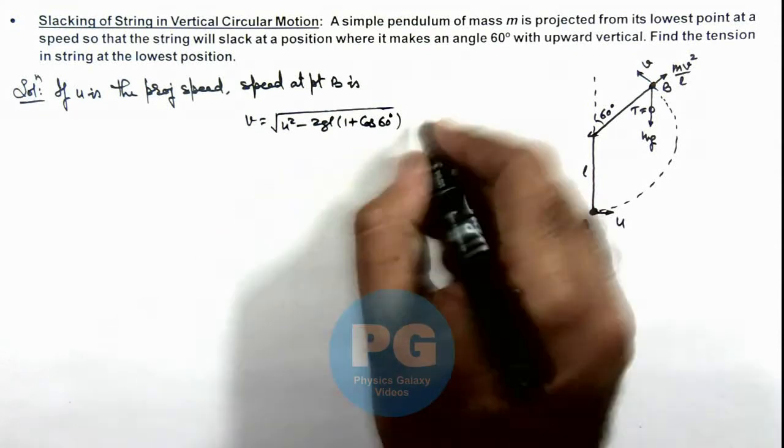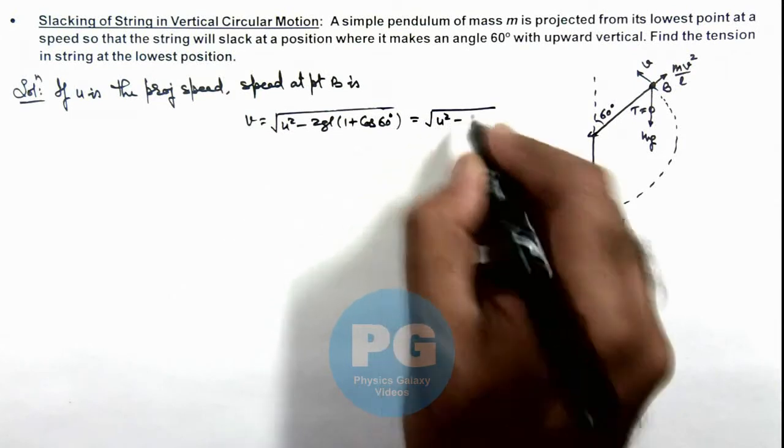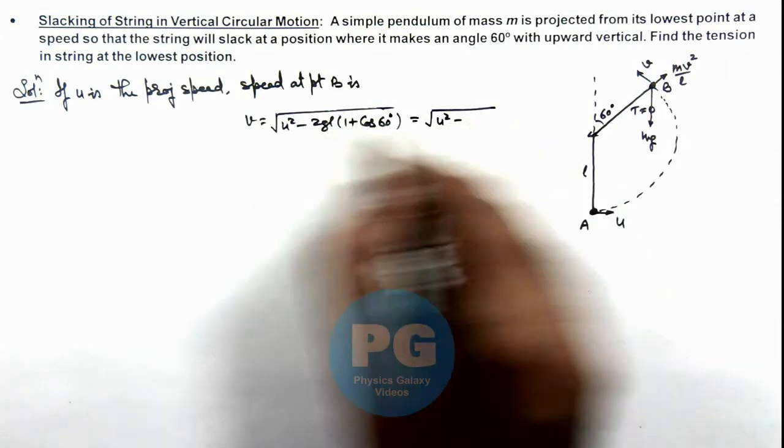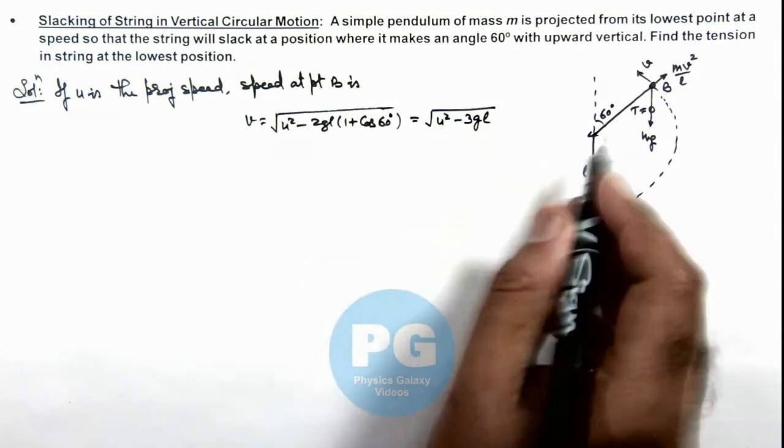So the value is given as root of u square. Minus, this is 1 plus 1 by 2, 3 by 2. This is u square minus 3gl. And we can write at point B.